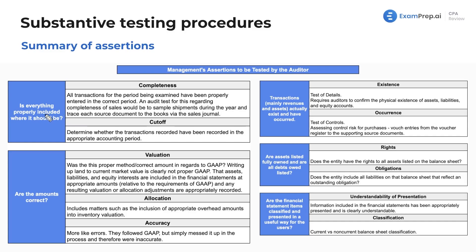The assertion related to whether everything is properly included where it should be starts with completeness. Completeness is concerned with whether all transactions for the period being examined have been properly entered. An audit test for completeness of sales would be to sample shipments during the year and trace each source document to the books via the sales journal. Completeness is usually associated with tracing.